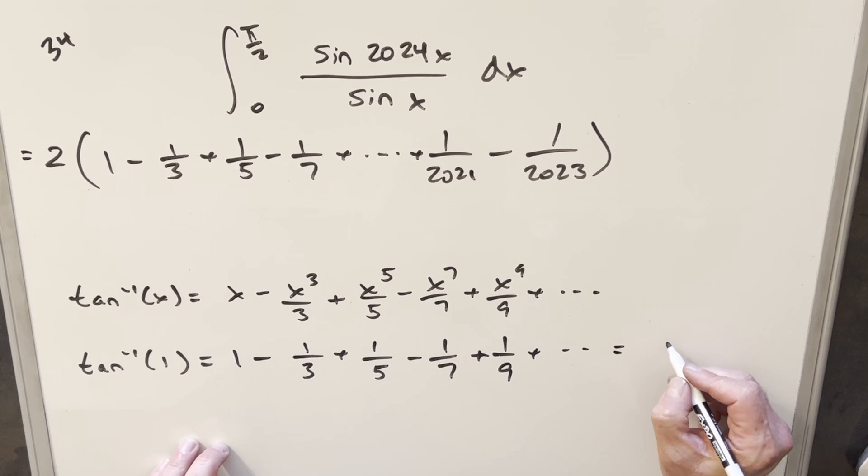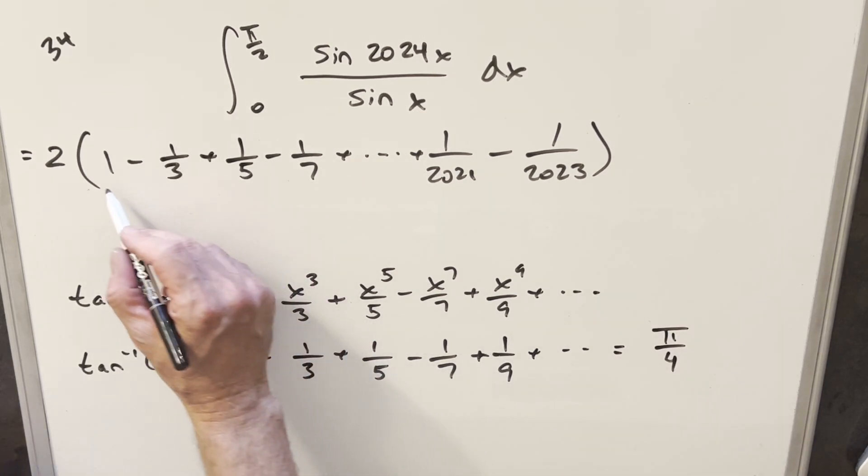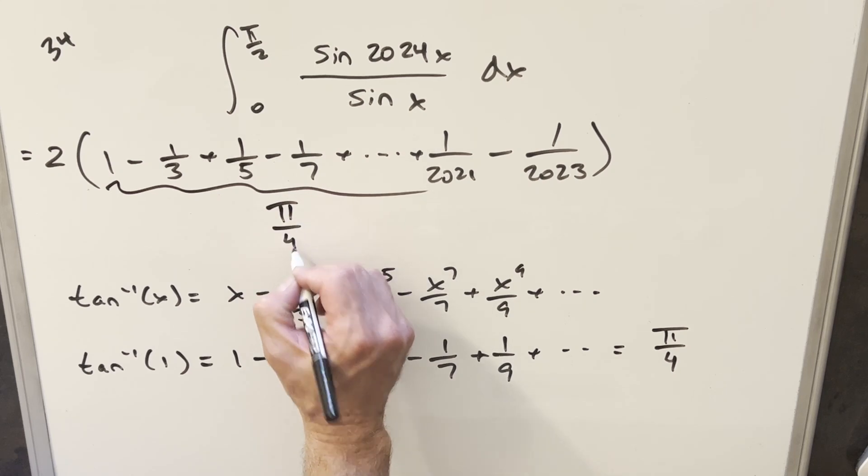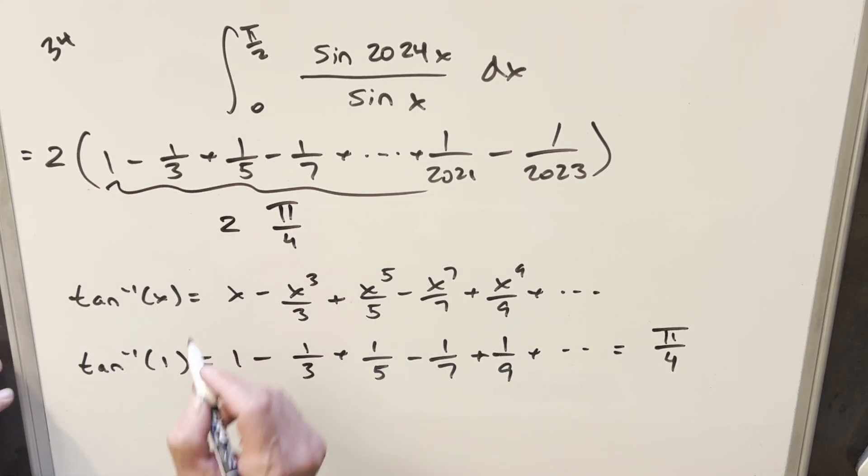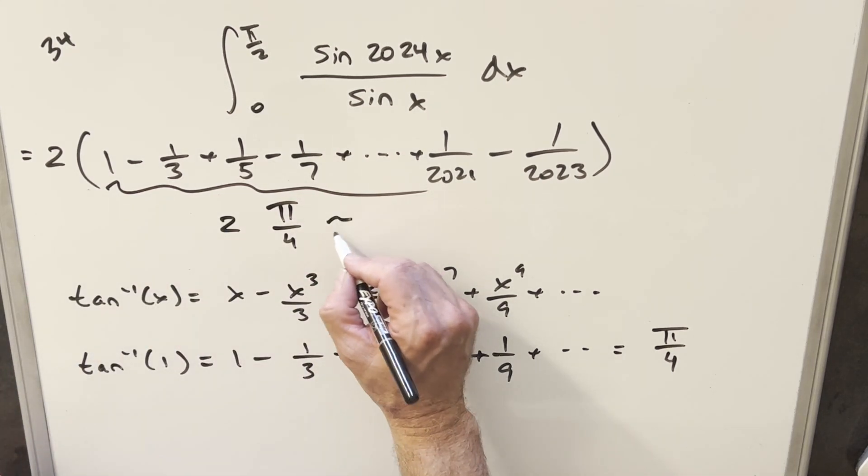And for this right here, because we know what arctan of 1 is, then we can get an exact value for this anyway. So the value for this arctan of 1 is just π/4. And so what I'm saying is all this stuff is going to be very close to π/4.